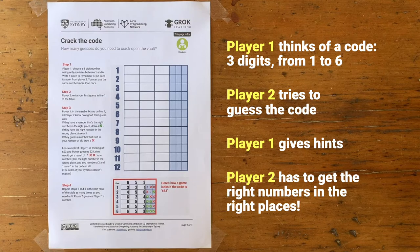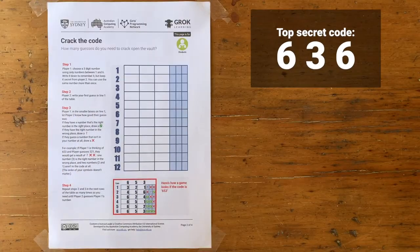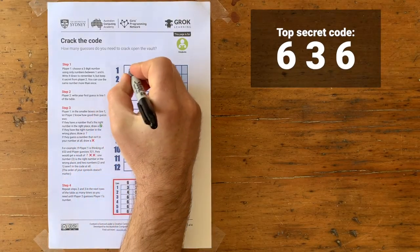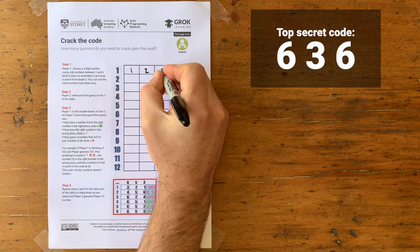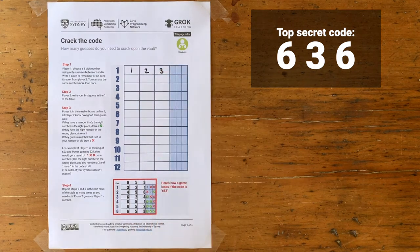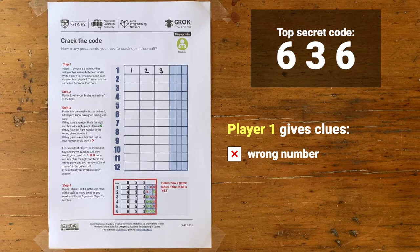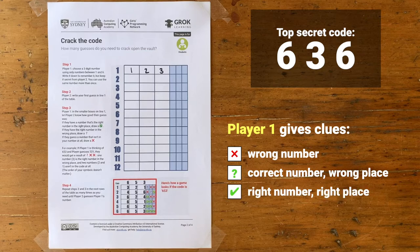Player 2 has to guess the correct numbers in the correct order. Here's Player 1's code — I can't see what it is, but you can at home, so it's easier for you to follow along. I haven't got any idea what the code is yet, so I'm just going to guess any three numbers. Player 2 gives me some clues — three symbols, one for each place in the code. If my number is completely wrong, I get an X. If it's the right number but in the wrong place, I get a question mark. And if it's the right number in the right place, I get a tick.